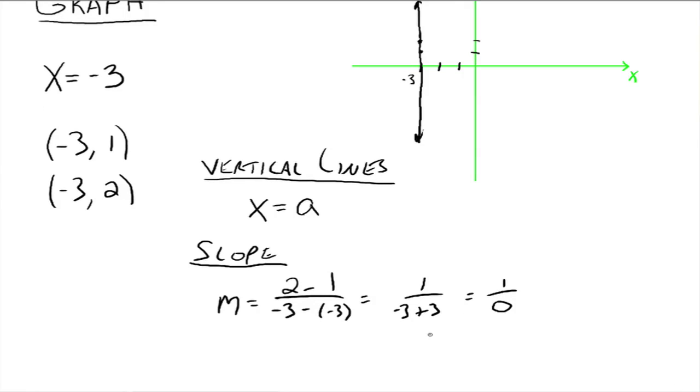And that is undefined. Remember 0 in the denominator, we have an undefined number. So the slopes of vertical lines are always undefined. And this is the reason why. And the slopes of horizontal lines are always 0. Alright, study well. Please let me know if you have any questions.